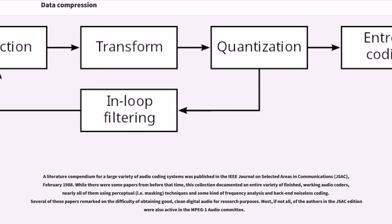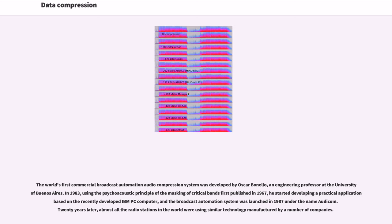Several of these papers remarked on the difficulty of obtaining good, clean digital audio for research purposes. Most, if not all, of the authors in the J-SAC edition were also active in the MPEG-1 Audio Committee. The world's first commercial broadcast automation audio compression system was developed by Oscar Bonello, an engineering professor at the University of Buenos Aires. In 1983, using the psychoacoustic principle of the masking of critical bands first published in 1967, he started developing a practical application based on the recently developed IBM PC computer, and the broadcast automation system was launched in 1987 under the name Autocom. Twenty years later, almost all the radio stations in the world were using similar technology manufactured by a number of companies.